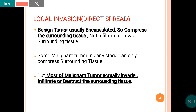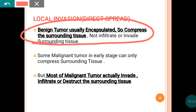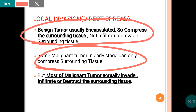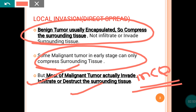Usually benign tumor is encapsulated, so it can only compress the surrounding tissue. It cannot invade or infiltrate the surrounding tissue. Only malignant tumor can invade the surrounding tissue. But in the early stage, malignant tumor might just compress the tissue and might not infiltrate. Most malignant tumors can invade, infiltrate, and destruct the surrounding tissue. Remember: if any tumor is invading the surrounding tissue, the answer is malignant tumor.